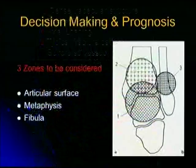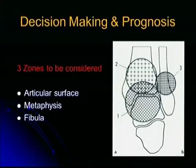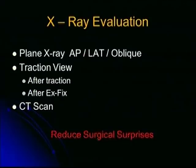The injury management of the soft tissue envelope is the key to relative success or dismal failure. For decision making and prognosis, you have to consider three zones: the articular surface, the metaphysis, and the fibula. For X-ray evaluation, get routine X-rays — anteroposterior, lateral, and oblique. A traction view is most important for those who do not have CT scans. But if you have CT scan facility, then all intra-articular fractures require a CT scan for good planning — it reduces surgical surprises.